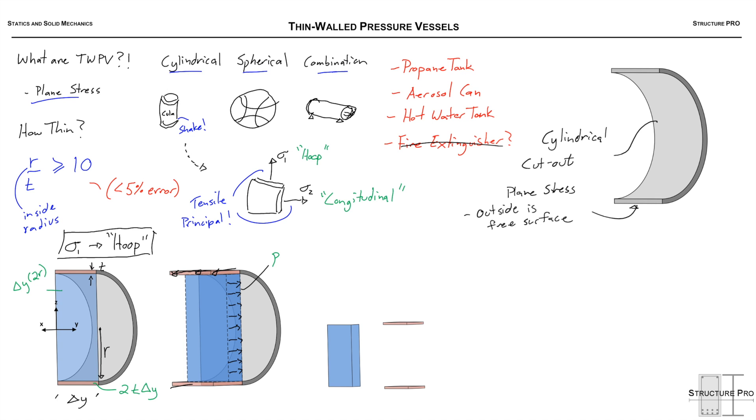The blue is the area that the pressure p is pushing on inwards, and the red is the area that sigma 1, the hoop stress, is being activated to counteract that. Sigma 1 hoop stress and the two are equal because the sum of the forces in the x-direction has to be zero. So we can write out this equation: sigma 1 times 2t times delta y equals delta y times 2r times p. We end up with sigma 1 equals pr over t.